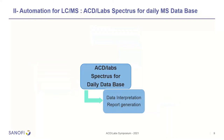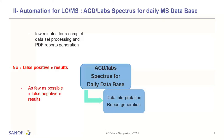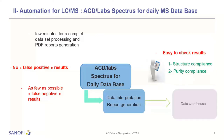For that, we have tested ACD Labs modules: Spectrus Processor and Spectrus Database. We wanted the process to be fast, and we had two essential key points: we want no false positive results, and as few as possible false negative results. And we also had a third important point — we wanted a system with which we can easily check the results, the structure compliance and the purity compliance, before sending the results to the data warehouse.